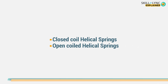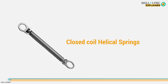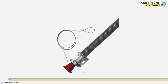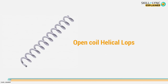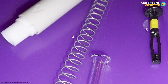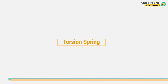Helical springs are further divided into closed coil and open coil helical springs. In a closed coil helical spring, the helices are placed at an angle less than 10 degrees and each coil is aligned over each other. They are usually employed in areas where stretching needs to be resisted — for example, garage door assemblies and vise grip pliers. Open coil helical springs have the helices placed at an angle greater than 10 degrees. They resist compression and are also known as compression springs, used in auto-injectors and ballpoint pens.